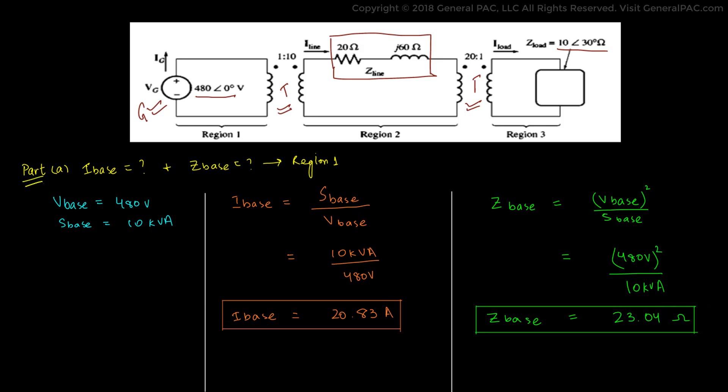By solving this above parts, we conclude that the minimum of the two base quantities can help us find all of the four base values and then we can convert the system into per unit equivalent systems.